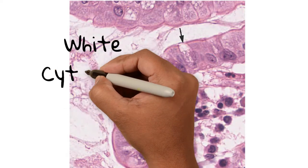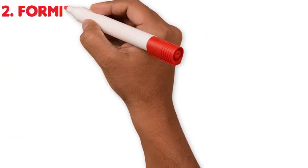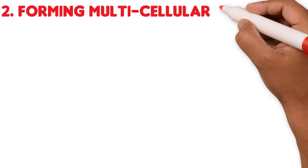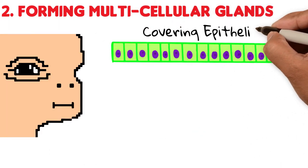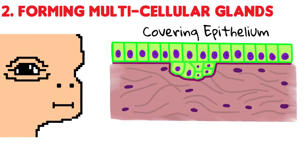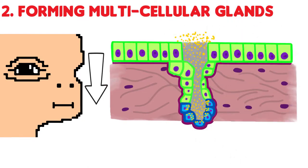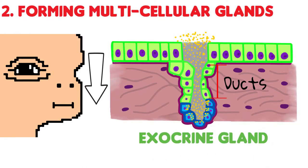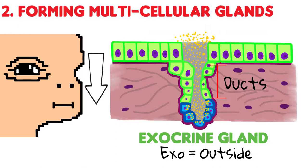Mucin is a protein that gets expelled into the lumen and gets hydrated, turning into mucus. On conventional histologic preparations, the secretory granules appear white. When multiple secretory cells come together, they can create multicellular glands. These glands in the fetus develop from cells in the covering epithelium, which proliferate and grow towards the connective tissue below the basement membrane. If the original connection with the covering epithelium remains, these cells transform into epithelial cells lining the ducts of the gland, now known as an exocrine gland.